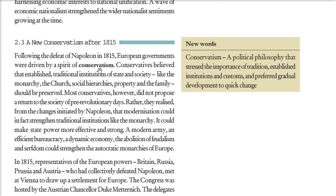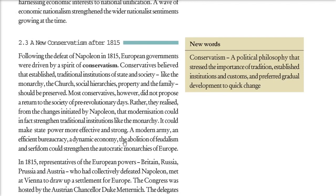Most conservatives realized that modernization could in fact strengthen traditional institutions like the monarchy. A modern army, an efficient bureaucracy, a dynamic economy, and the abolition of serfdom could strengthen the autocratic monarchies they wanted to restore in Europe. So in 1815, certain European powers — Britain, Russia, Prussia, and Austria — who had defeated Napoleon sat together in Vienna to draw up a settlement for Europe.